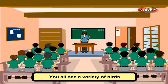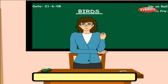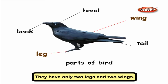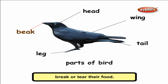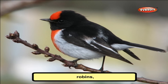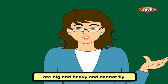Birds: we see a variety of birds all around us. There are thousands of birds that exist on earth. Birds have a unique ability to fly. Their special features are: a light body, bones that are very light in weight and hollow, only two legs and two wings, body covered with feathers, strong beaks to pick up, break, or tear their food, and a tail to balance during flight. Common birds include crow, sparrow, eagle, pigeons, robins, kite, vulture, hen, and duck. Some birds like ostrich, kiwi, and penguins are big and heavy and cannot fly — they are called flightless birds.